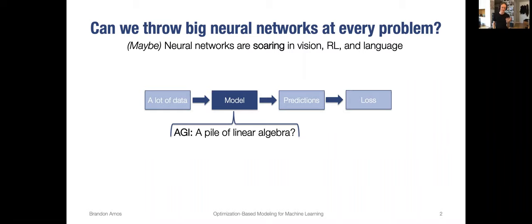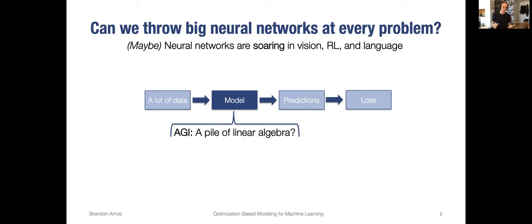On one hand, neural networks and big models are providing a lot of really compelling empirical successes in many fields — from vision, reinforcement learning, and language. Maybe if we're able to continue scaling up the data collection process and the compute capacities for training such models, maybe the solution to something like artificial general intelligence is to throw a big neural network at a lot of data. But when some of these settings don't hold — when you don't have a lot of data, or not a lot of compute, or when you want to interpret what's going on inside the model — it's worth thinking about how you can add structure to your model.